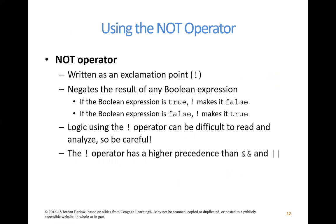Just want to note the not operator. Anytime you see an exclamation point in C-sharp code, it means 'do the opposite of whatever follows.' If whatever is in the control statement evaluates as true, the exclamation point before it makes it false, and vice versa. This can come in handy sometimes, but it can also get confusing as your brain works around the logic of doing the opposite of what you've written. Use it when needed, but think very carefully and logically before including a not operator.